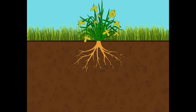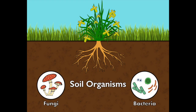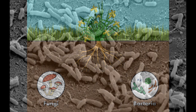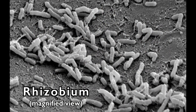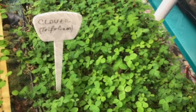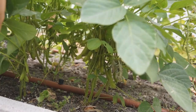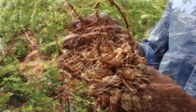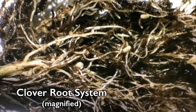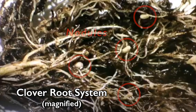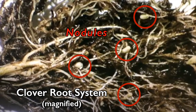Meanwhile, in the soil itself, tiny microorganisms such as fungi and bacteria will also fix stable nitrogen gas into usable compounds. One such microorganism is rhizobium, a nitrogen fixing bacterium. Rhizobium lives in the root systems of legume species such as clover, soybeans, and peanuts. Shown here is the magnified root system of a clover plant. The roots have ovoid-shaped growths called nodules, which house the rhizobium.